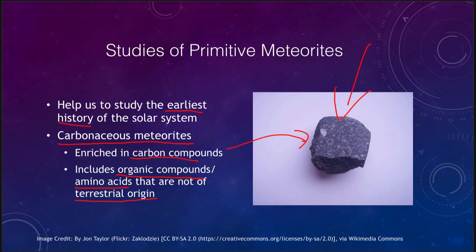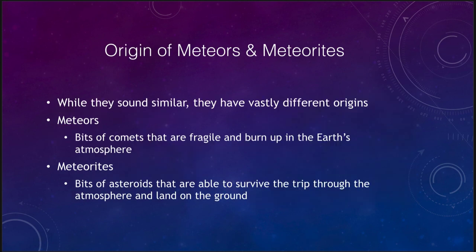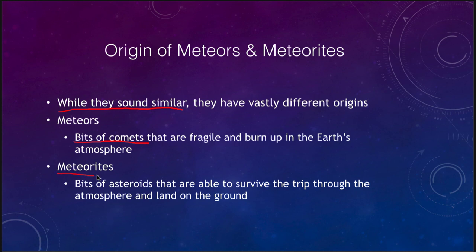Although meteors and meteorites have similar-sounding names, they have very different origins. Meteors are bits of comets — fragile objects that burn up in the Earth's atmosphere and never make it down to the surface. Meteorites, on the other hand, are generally larger bits of asteroids, sturdy enough to survive the trip through the Earth's atmosphere and land on the ground where we can study them.